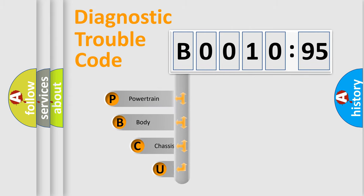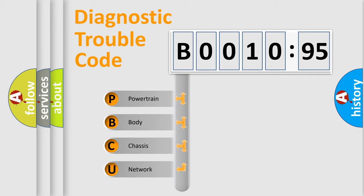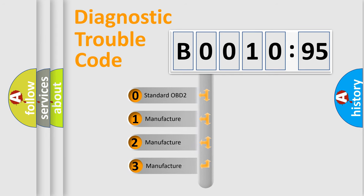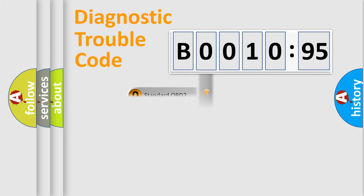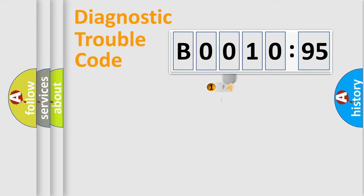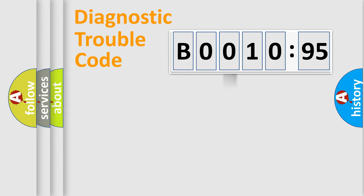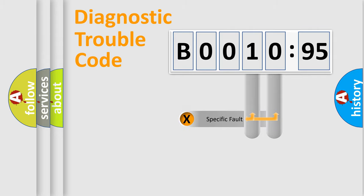This distribution is defined in the first character of the code. If the second character is expressed as zero, it is a standardized error. In the case of numbers 1, 2, or 3, it is a more specific car-manufacturer error. The third character specifies a subset of errors, valid only for the standardized DTC code. The last two characters define the specific fault of the group. The add-on to the error code serves to specify the status in more detail, for example, a short to ground. Such a division is valid only if the second character code is expressed by the number zero.